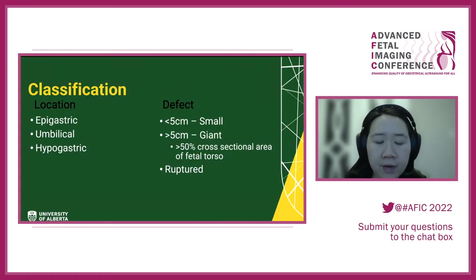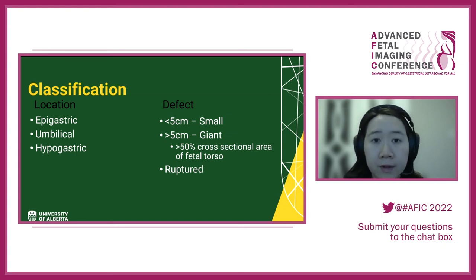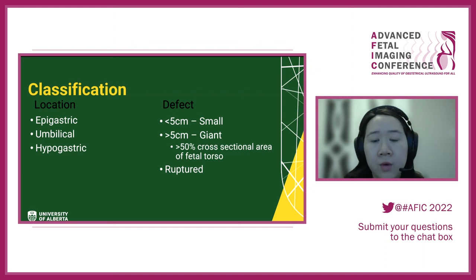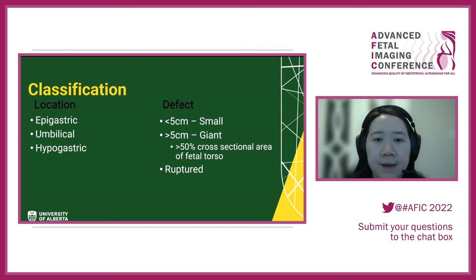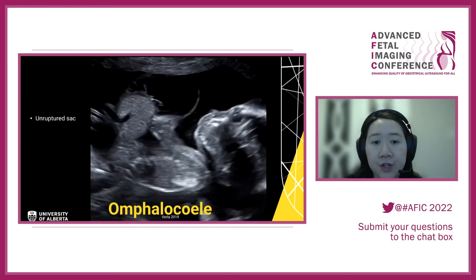Classification of omphalocele: location matters — is it epigastric (above the umbilicus), umbilical, or hypogastric? The size of the defect also matters — is it small or giant? If over 50% of the cross-section of the fetal torso is involved, we expect it to be a giant omphalocele. Whether it is ruptured is also important.